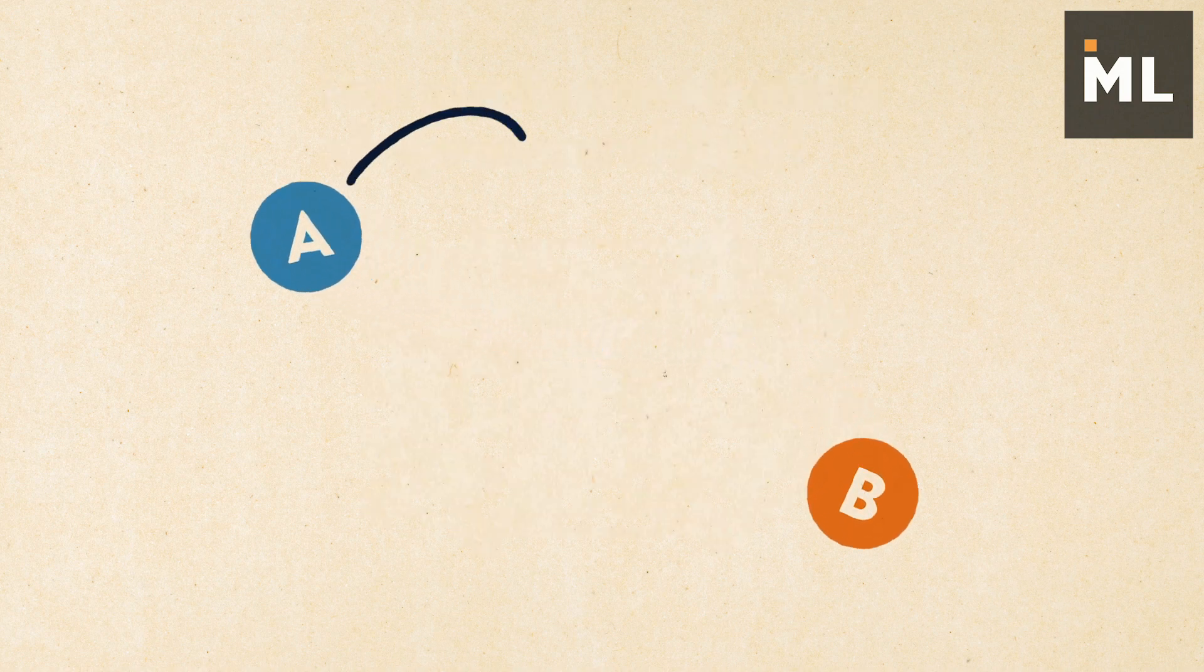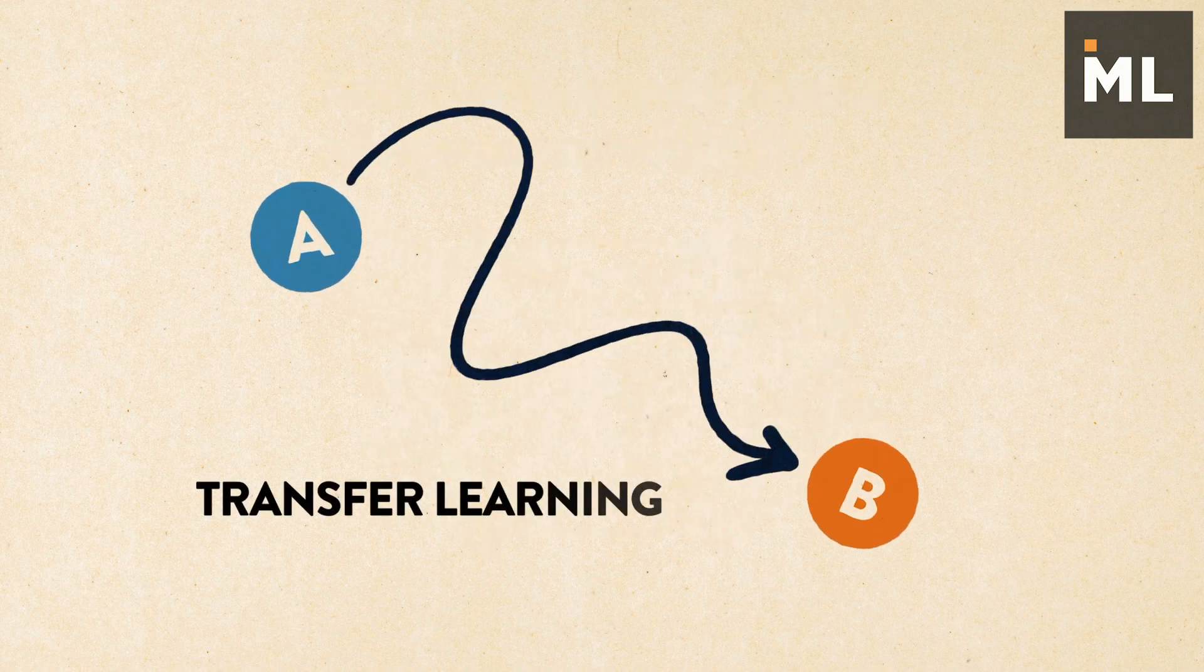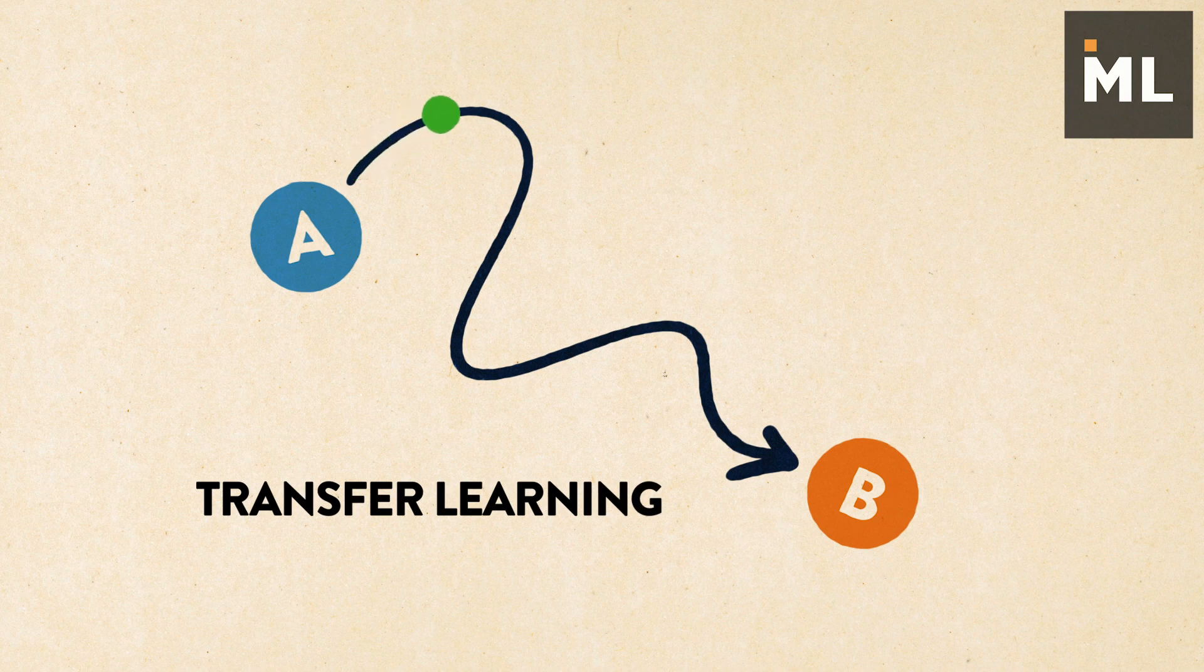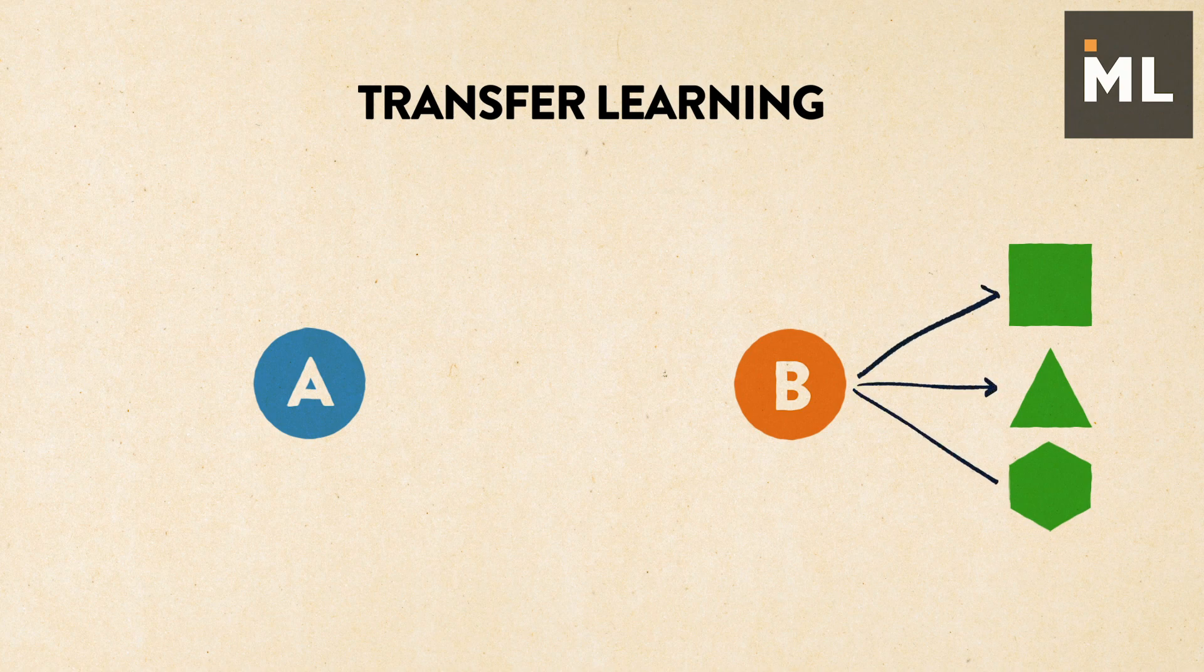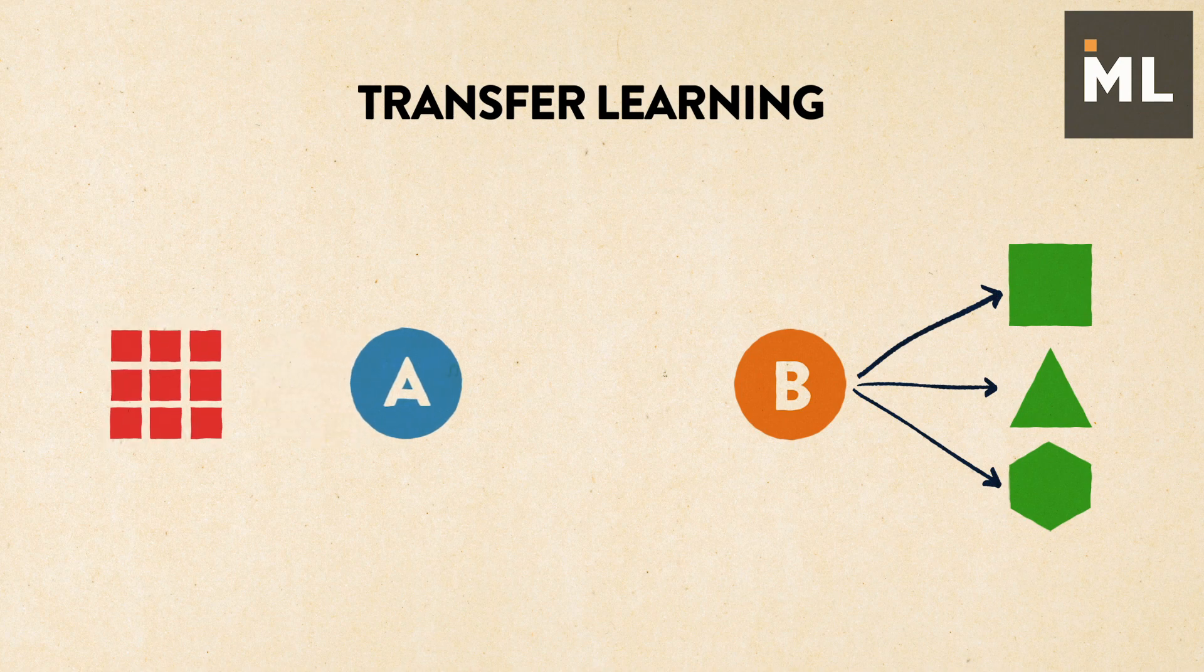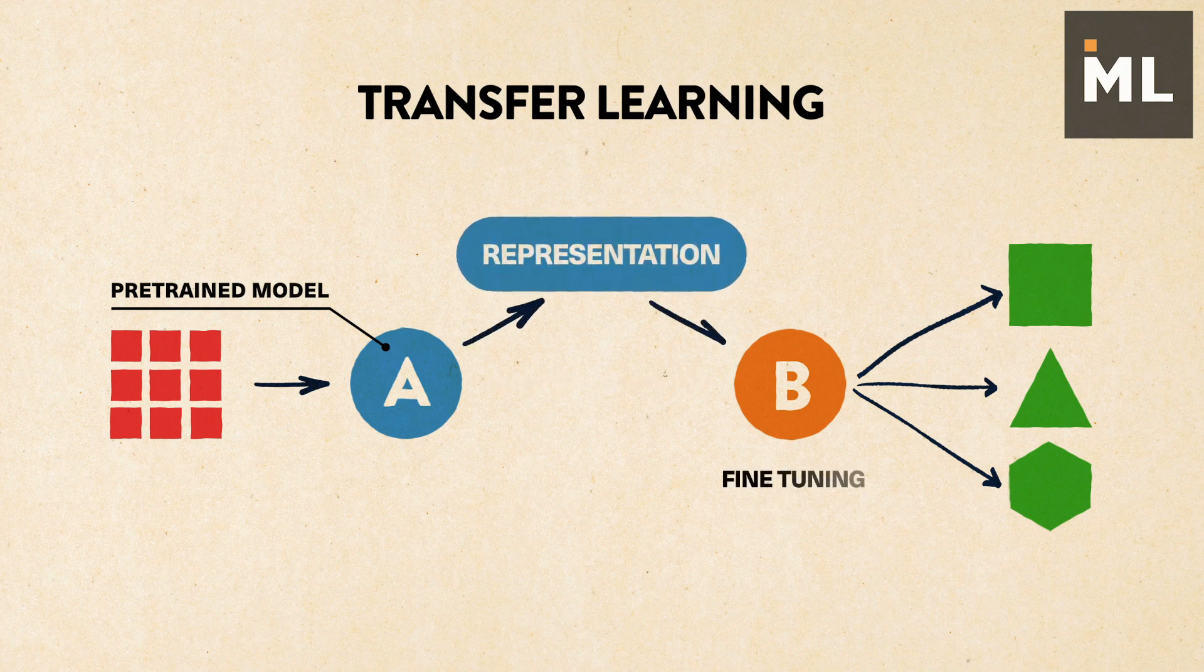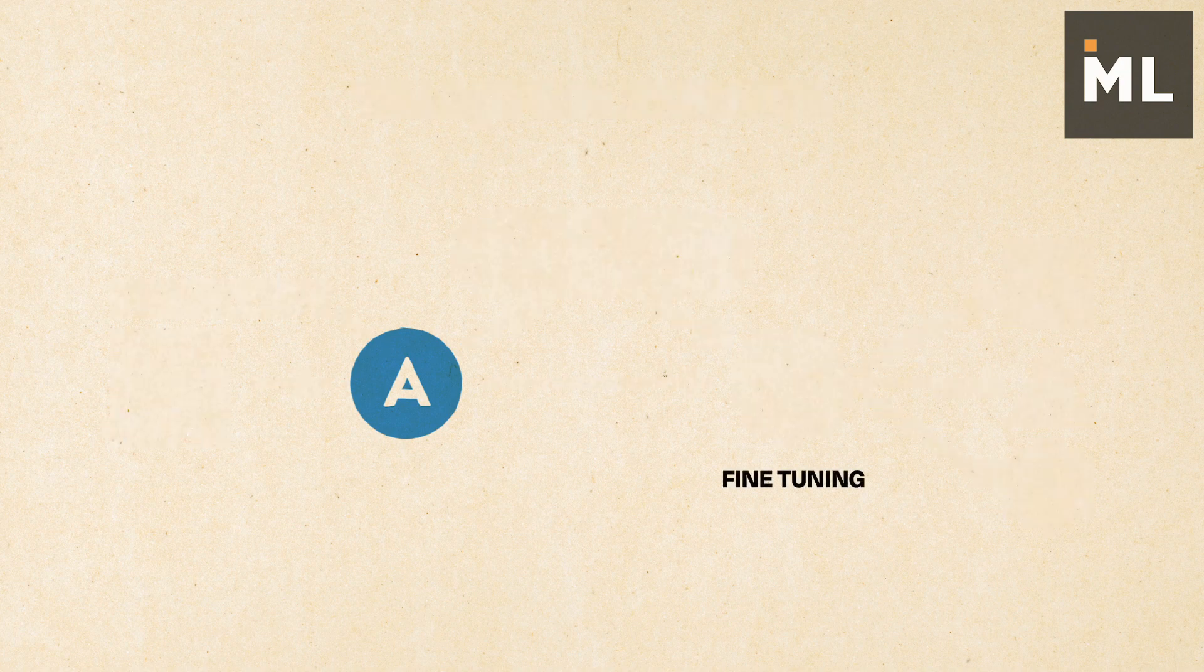Transfer learning is one method to solve this problem. It enables the model to utilize knowledge from previously learned tasks and apply them to new related ones. For example, in image classification tasks, very few people train an entire convolutional neural network from scratch, which usually needs millions of labeled images. Instead, it's common to use pre-trained models and fine-tune them on the targeted domain.